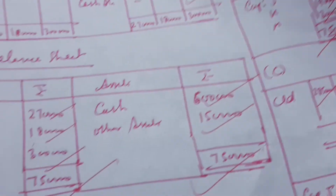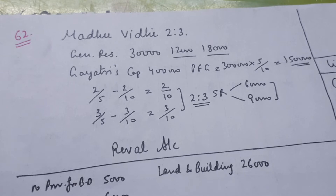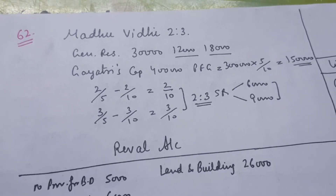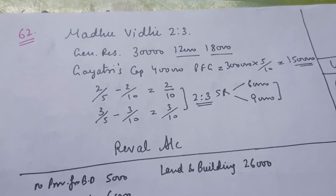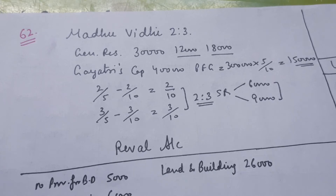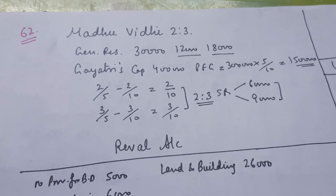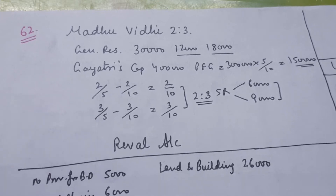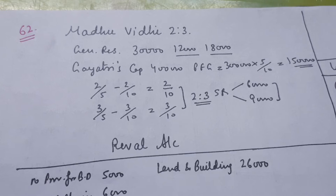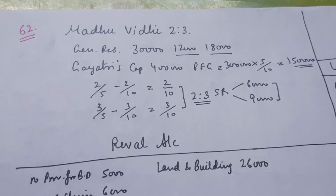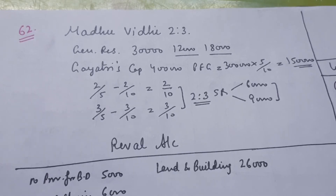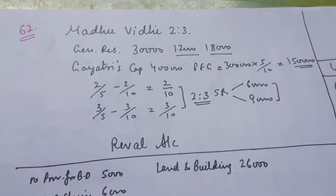Question 61 is completed. Now we will talk about Question 62. In Question 62, the ratio is 2:3. The capital account has entries on the asset side. A new partner is brought in at $235 on goodwill. The goodwill/Hamilton value is $4,000 USD.